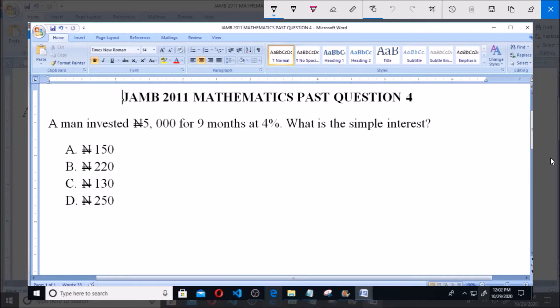And D: 250 naira. Now the question says a man invested 5,000 for nine months. We know that simple interest I equals principal multiplied by the rate multiplied by time all over 100. Now we are asked to find the simple interest.